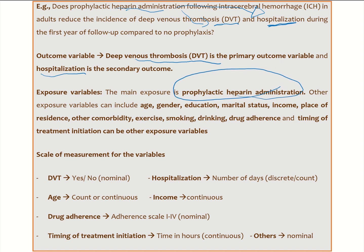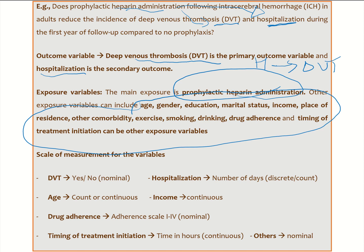As I said, for each research question we should be able to collect as many exposure variables as we can. We have to collect data on all of these exposure variables. The rationale is to identify the pure effect of heparin on DVT or hospitalization — we have to be able to control all other potential confounding variables.